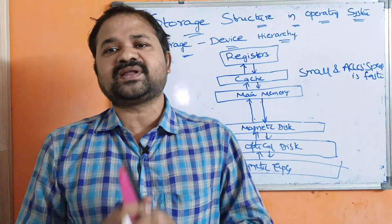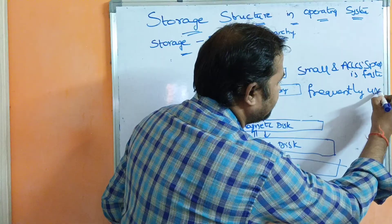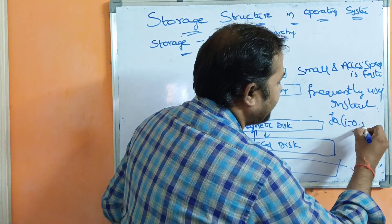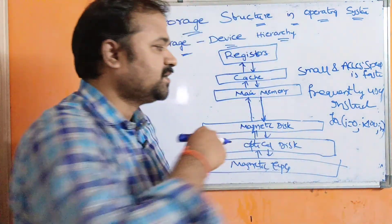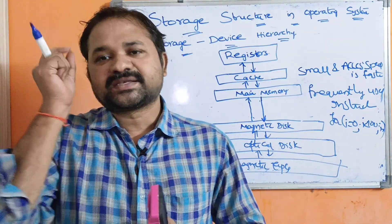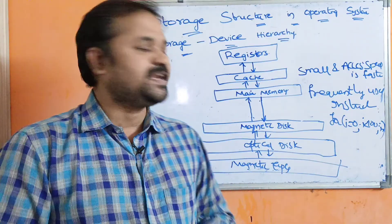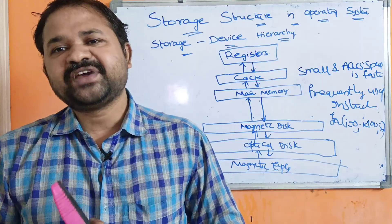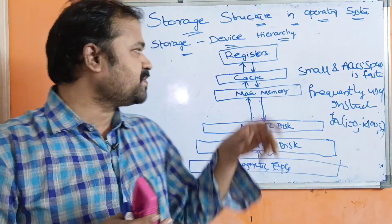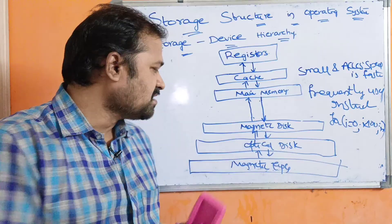Cache memory is mainly useful in order to store frequently used instructions. For example, consider a for loop such as i=0, i<100, i++. In this situation, we are repeating the for loop 100 times, which means the CPU has to access i 100 times. In those types of situations, the operating system stores the data in cache memory because cache memory is very, very faster than main memory. The CPU can access the content of cache memory, as well as registers and main memory.